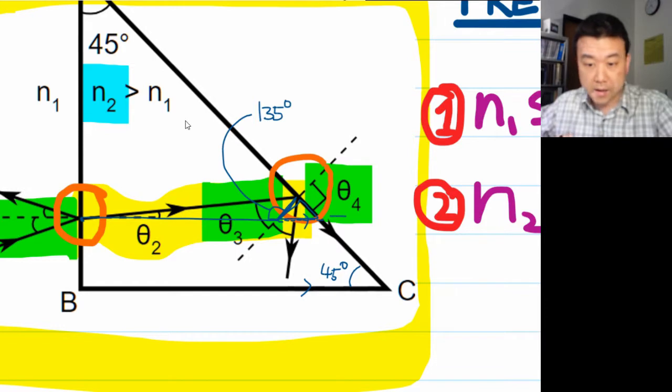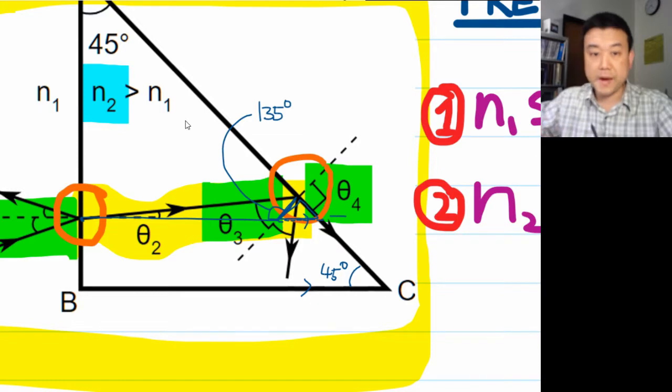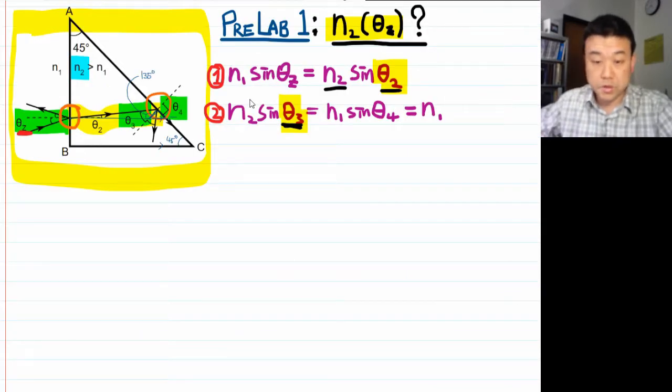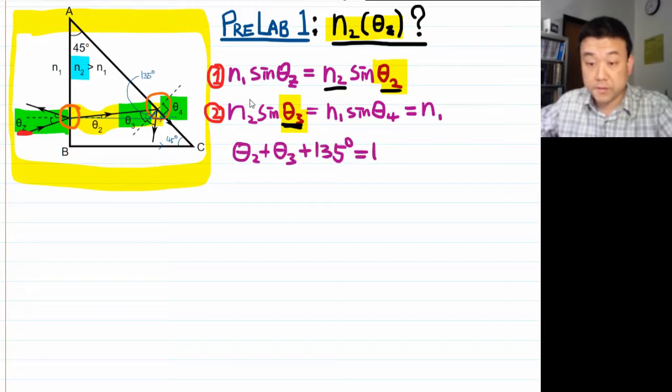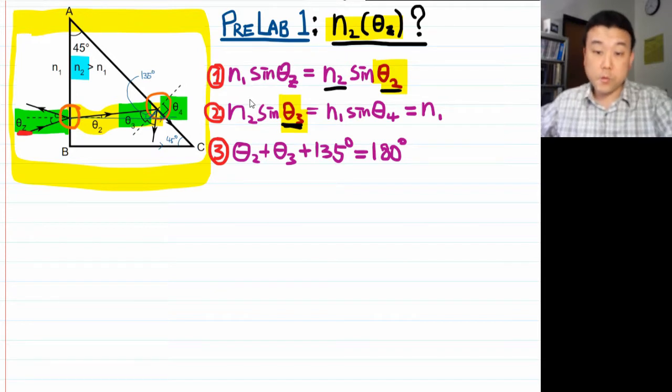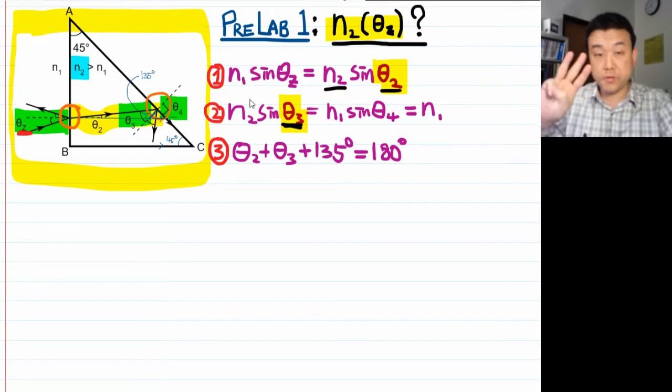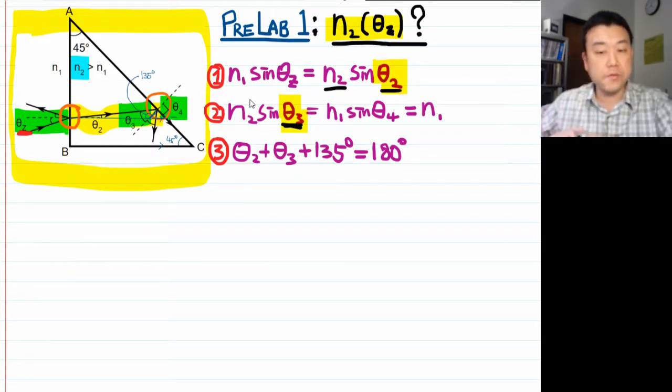So that gives this angle here as 135 degrees. I think I have enough information to write down a relationship relating theta 2 and theta 3. My third and last equation is that some of these three internal angles of triangle are equal to 180 degrees. This third equation introduced no new unknowns. So I still have three unknowns, but now I have three equations. So now I know I can solve it.